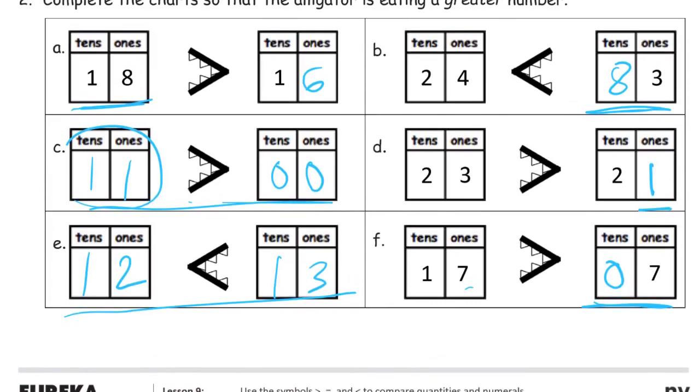And let's just check one last time here 18 is greater than 16, 24 is less than 33, 11 is greater than 0, 23 is greater than 21, 12 is less than 13 and 17 is greater than 7.